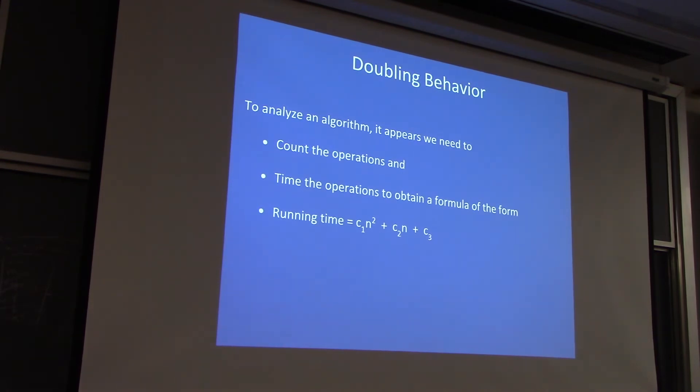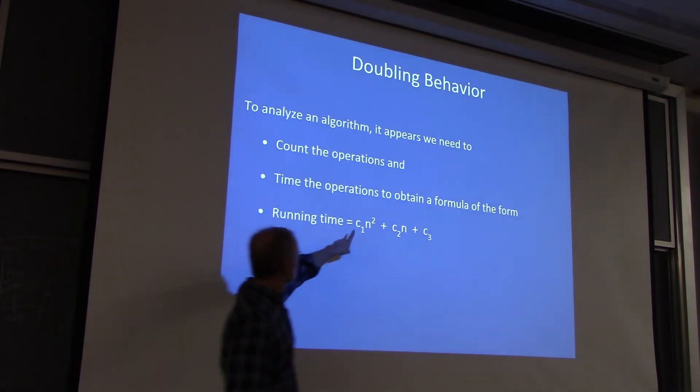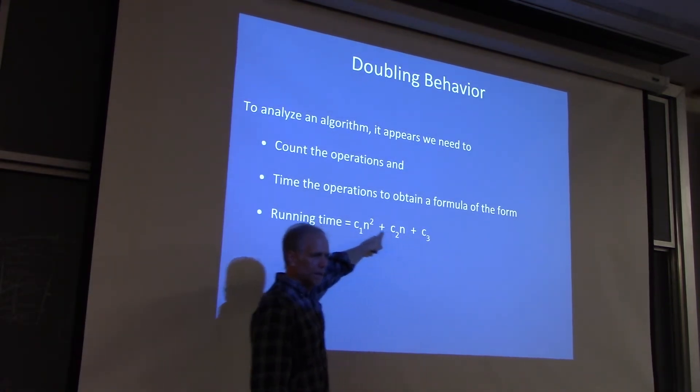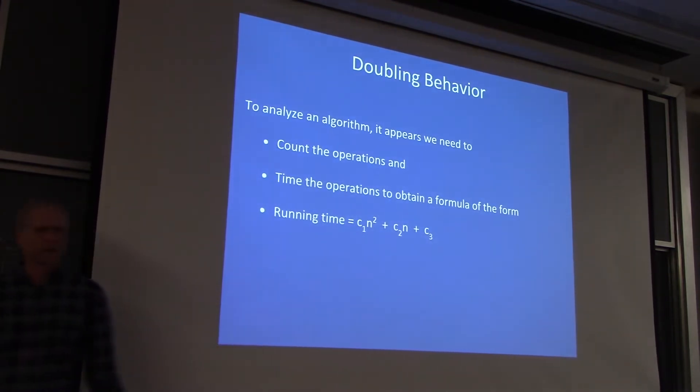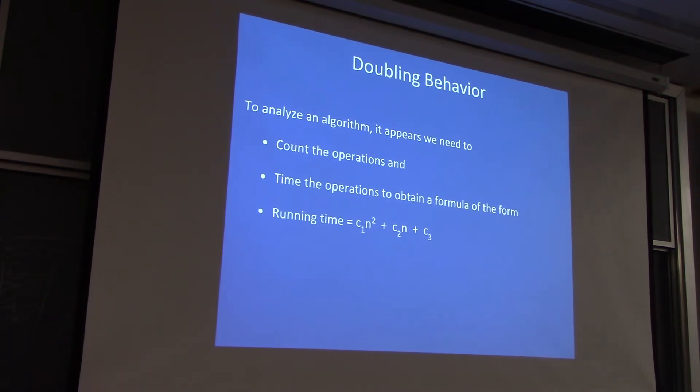Now, what we just did was counted operations, timed the operations, and came up with predicted running time. But suppose that you are only interested in the doubling behavior of the algorithm. All you care about is figuring out what happens to the running time when the input size doubles. I want to figure out how much of this formula matters in terms of predicting the doubling behavior.